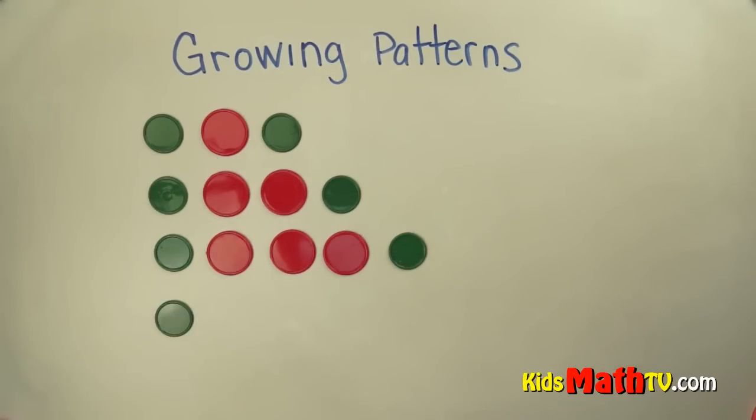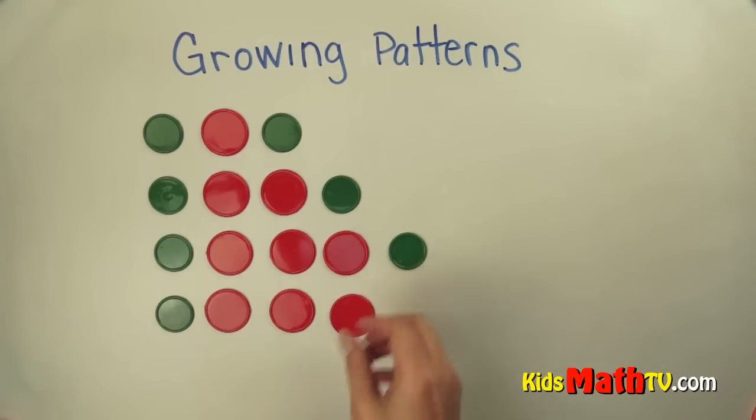Let's do another one. Red, and then we would have, sorry that's green, then red, red, red, and it has to grow by one, so there's one more red.